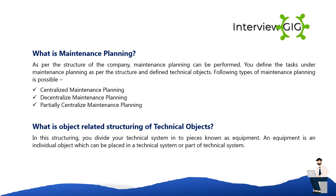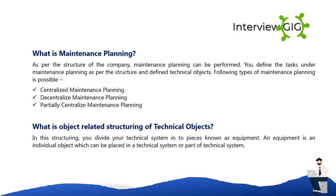What is object-related structuring of technical objects? In this structuring, you divide your technical system into pieces known as equipment. Equipment is an individual object which can be placed in a technical system or can be part of a technical system.